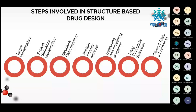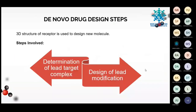De novo drug design uses the 3D structure of receptors to design a novel molecule. The steps involve determination of the lead-target complex and design of lead modifications. If a protein receptor has active sites, a ligand can interact at those sites — this ligand is called a lead. We focus on docking analysis to see how our drug interacts with the target protein receptor. If modification is needed, we can do it at this stage. This is how we make a new drug de novo from a 3D structure.